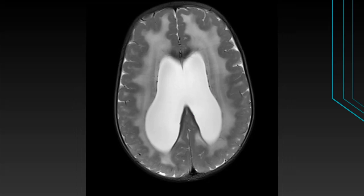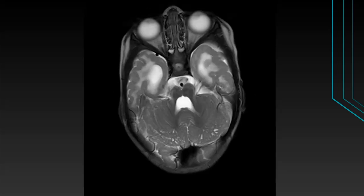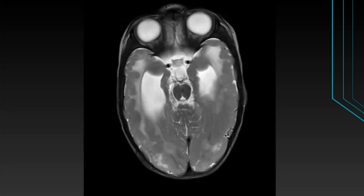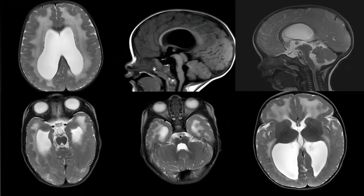Hypoplastic flattened pons is seen with prominent fourth ventricle and kinked pontomesencephalic contour. Diffuse T2 hyperintensity is seen involving cerebral white matter bilaterally, suggesting abnormal myelination. Multiple subcortical cysts are seen in bilateral cerebral hemispheres. Mild protrusion of the sclero-uveal coat of bilateral orbits is seen. Bumpy dysplastic gyri with shallow sulci in both cerebral hemispheres are consistent with polymicrogyria, and mild protrusion of the sclero-uveal coat is consistent with posterior staphyloma.